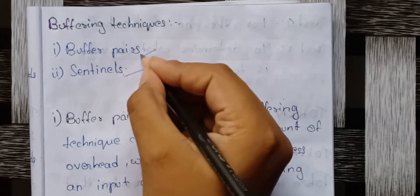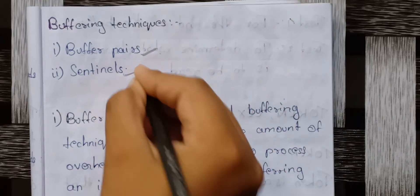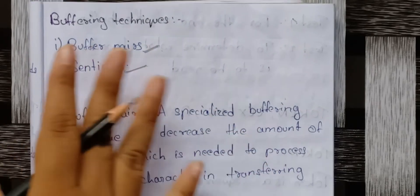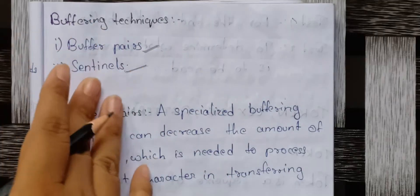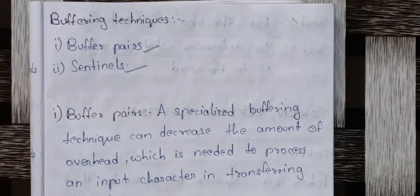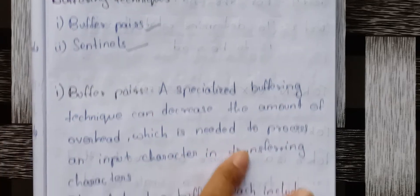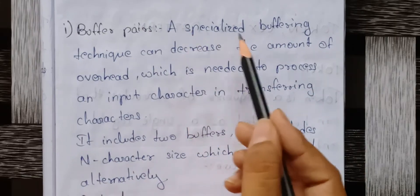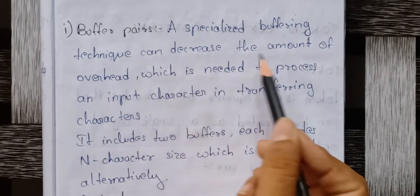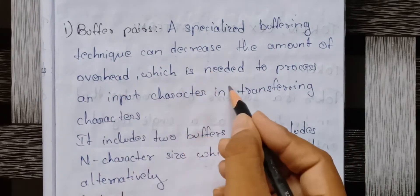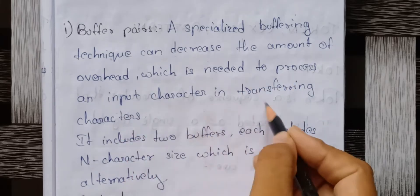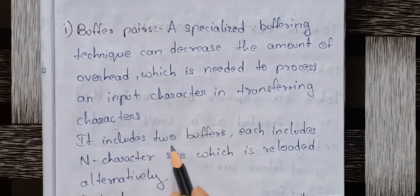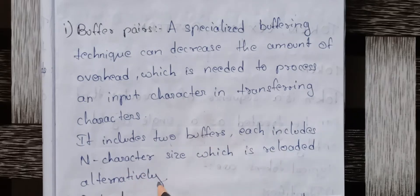So, these are buffer pairs and sentinel. A specialized buffering technique can decrease the amount of overhead which is needed to process an input character in transferring characters. It includes two buffers, each includes N character size which is reloaded alternatively.